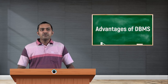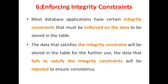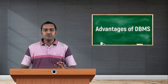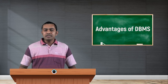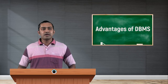The sixth advantage is enforcing integrity constraints. Integrity constraints means we are forcing some conditions or constraints. For example, if you want to recruit a person as an employee, his age should be 18 or greater than 18. If you specify this constraint, then only those who are 18 or older can have their details inserted in the employee records. This feature is not available in the file management system — that is one more disadvantage of file management system — but enforcing integrity constraints is possible in a database management system.